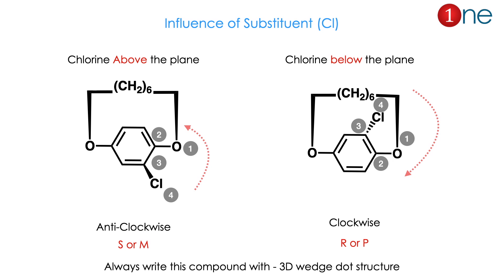The position of the substituent — chlorine — matters, similar to the lowest-priority rule in CIP. Chlorine above the plane always reverses the assignment. In the first structure, chlorine is above the plane: going 1, 2, 3, 4 is anticlockwise, giving M or S. If chlorine is on the back side, going 1, 2, 3, 4 is clockwise, giving R or P. So chlorine's front or back position changes the configuration. Always draw with a 3D structure to avoid confusion.